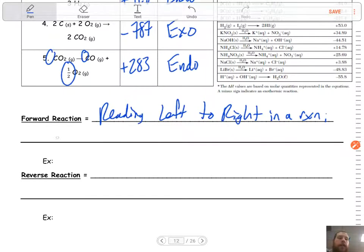That means the reaction moves toward the right. So it would read something like this, A plus B yields C plus D.